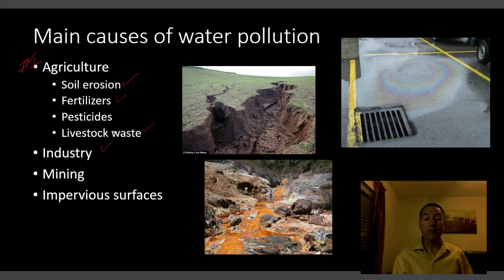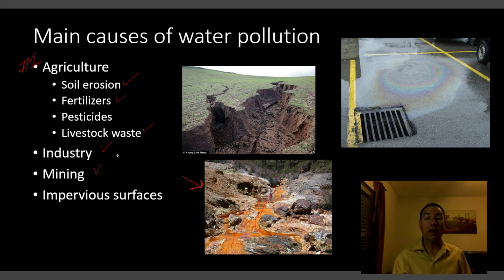After agriculture, it's mostly industry and mining. Industry and mining use water for cooling and as a solvent. Mining mostly produces acid mine drainage — water that gets into a mine starts to dissolve rock in these areas, which can be acidic and drain into the nearest water body. That's what you see in this picture — water coming from a mining area with all this orange coloration. In developing countries sometimes it's cyanide, because gold mining uses cyanide.